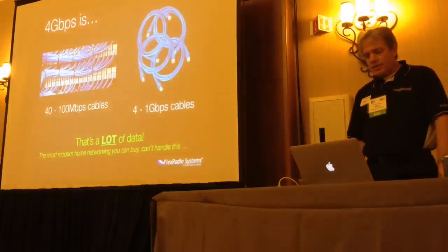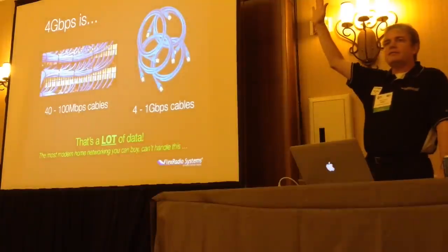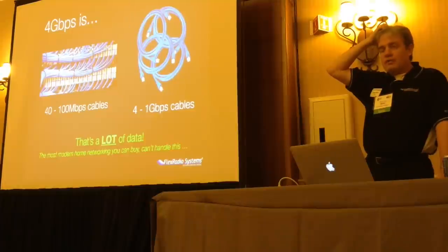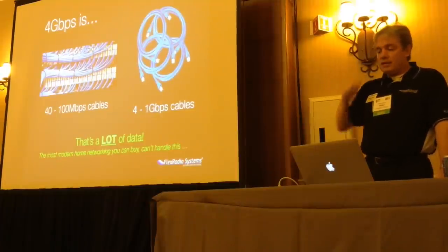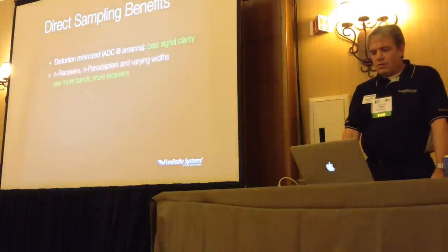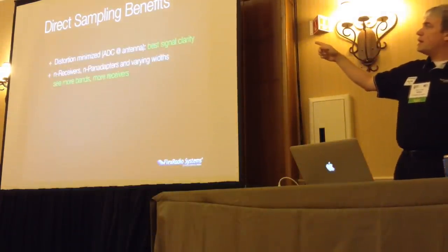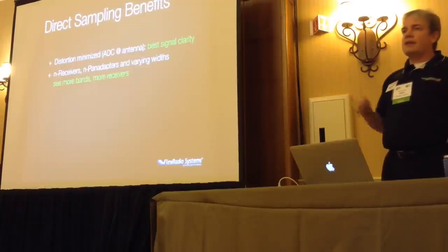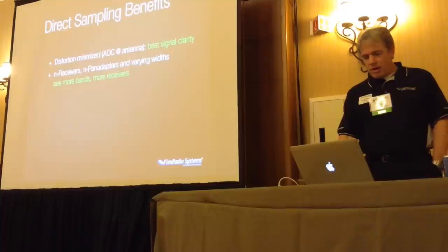What is 4 gigabits per second? If you have a gigabit network at home, it's four times that. If you have a 100-megabit network, it's 400 of those. But the benefits include: by putting the ADC directly on the antenna, you get the best signal clarity because you don't have analog components creating mixing products. You can also take the entire HF spectrum, turn it into bits, and put individual receivers anywhere in it.